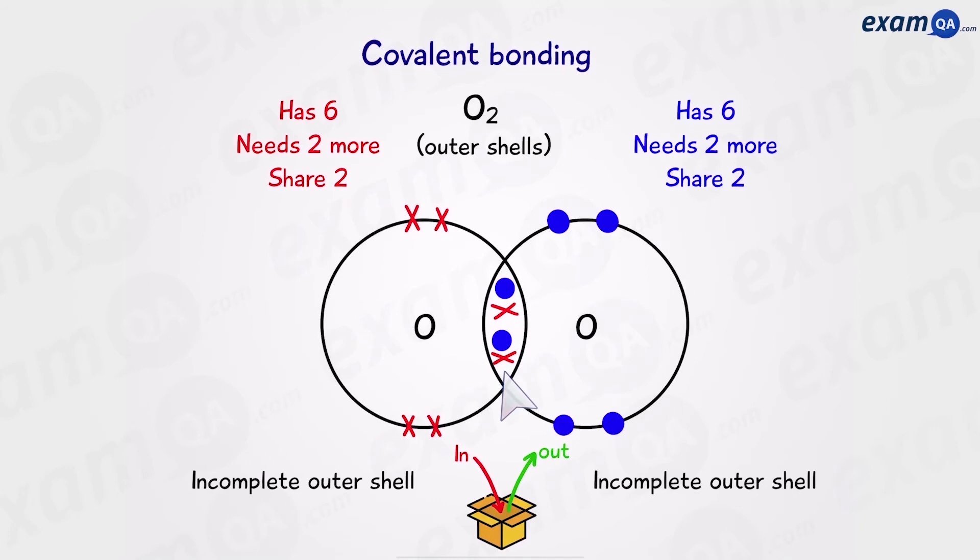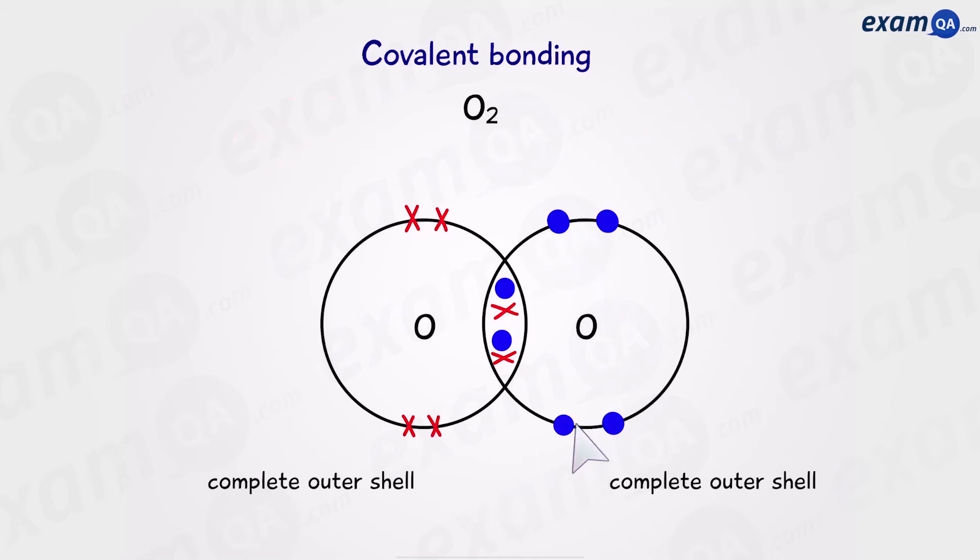So let's count how many electrons each atom has. Starting with the left. One, two, three, four, five, six, seven, and eight. And on the right. One, two, three, four, five, six, seven, and eight. Perfect. So both of them have a complete outer shell. And we've created an oxygen molecule.